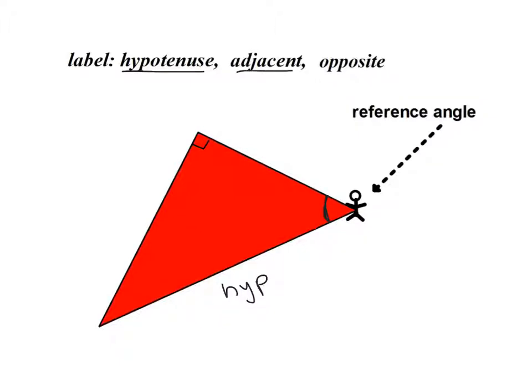The adjacent, the one that's nearest, closest to it. So that means this is my adjacent side. And the opposite side would be the opposite of my angle. So this would be the opposite side.